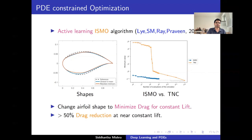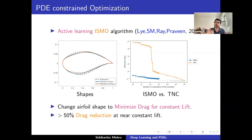Another application is PDE-constrained optimization: optimizing the shape of the airfoil to minimize drag at constant lift. With these methods we achieve 50% reduction of drag. Using an active learning algorithm — where the training set is learned on the fly during computation rather than fixed a priori — you can again get a factor of 30 speed-up compared to the state of the art.